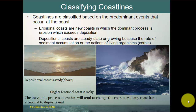Coastlines are classified based on the predominant events occurring at that coast. Erosional coasts are those in which erosion exceeds deposition — they tend to be rocky and often experience uplift. Depositional coasts are steady state or growing because the rate of sediment accumulation exceeds removal, sometimes aided by living organisms like coral. Eventually, wave action will change the character of any coast from erosional to depositional over time.